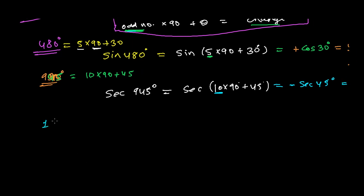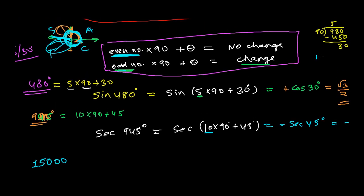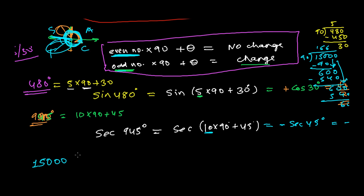Now let's try 15,000°. To do this, divide 15,000 by 90. Working through: 90×166 = 14,940, remainder 60. So 15,000 = 166×90 + 60°. Let's make it even more complicated: find tan(−15,000°). For negative angles, recall that tan(−θ) = −tan(θ), so tan(−15,000°) = −tan(15,000°).